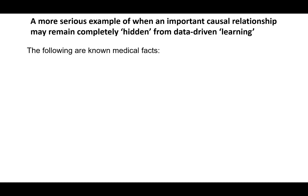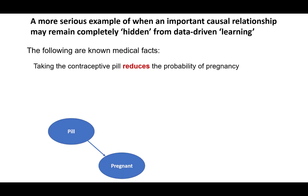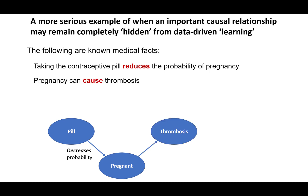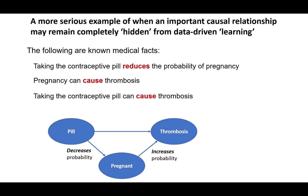Following are known medical facts. Taking the contraceptive pill reduces the probability of pregnancy, so there's a causal link from pill to pregnancy — when pill is true we get a decrease in probability. Pregnancy can cause thrombosis, so when pregnancy is true we get an increase in probability. And taking the pill can also cause thrombosis, so when pill is true we get an increase in probability.